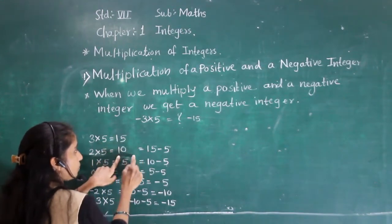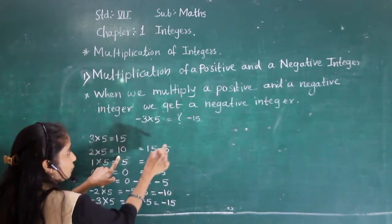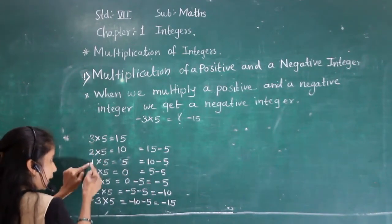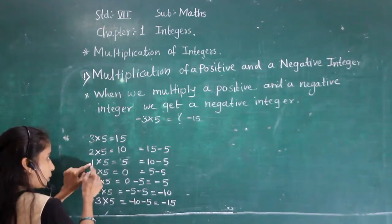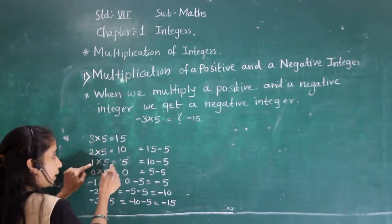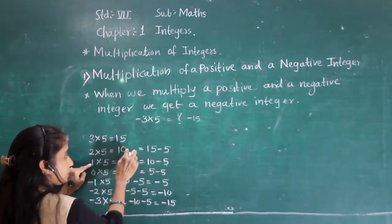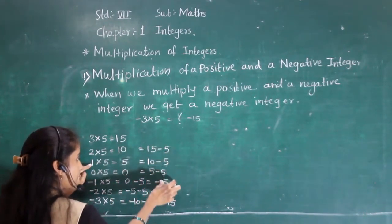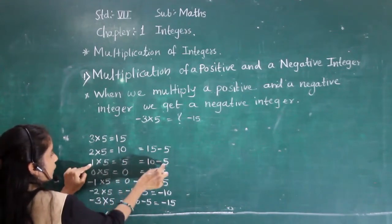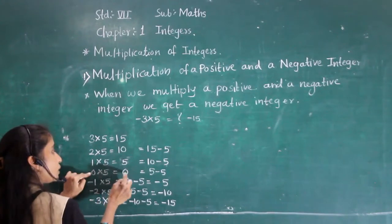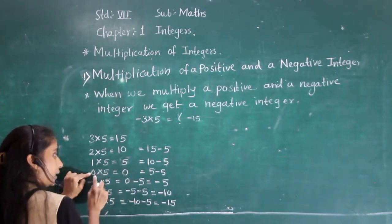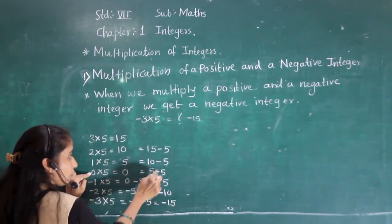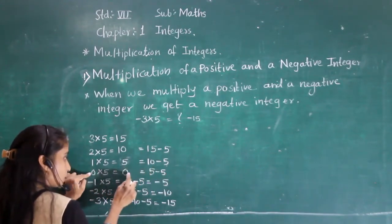So 10 is 15 minus 5. Then 1 into 5 equals 5, that is 10 minus 5. Then 0 into 5 equals 0 — any number multiplied by 0 gives 0 — and 5 minus 5 equals 0. Now following the pattern: minus 1 into 5 gives 0 minus 5, which equals minus 5.